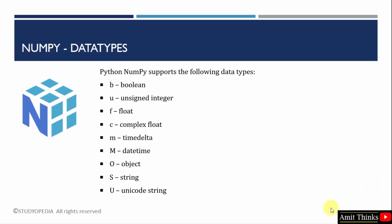In NumPy, the following are the data types. We have 'b' for boolean, 'u' for unsigned integer, 'f' for float, and others are also available. For string, we use 's'.